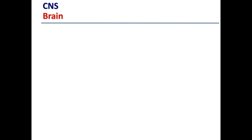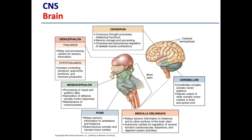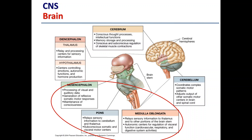We'll briefly look at a few areas of the brain and their function, focusing on motor planning and movement. At the bottom we have the brain stem, which is made up of the medulla oblongata, the pons — a bridge between the medulla and mesencephalon — and the mesencephalon itself. Collectively, these three areas relay and process sensory information to other parts of the brain via interneurons housed within the central nervous system, passing to areas such as the thalamus and hypothalamus.